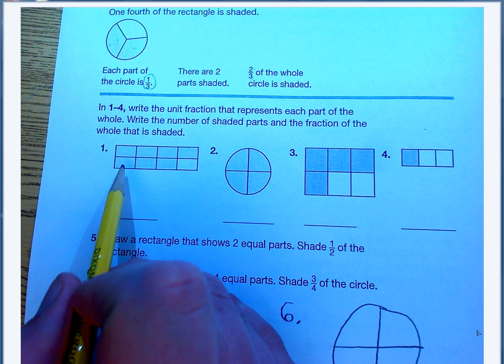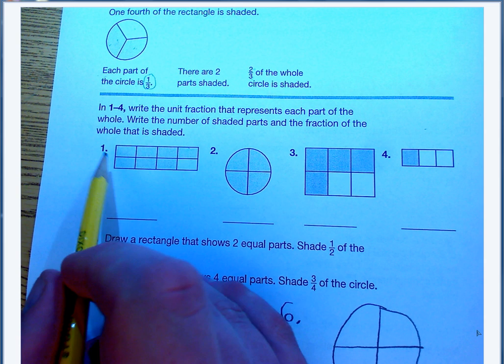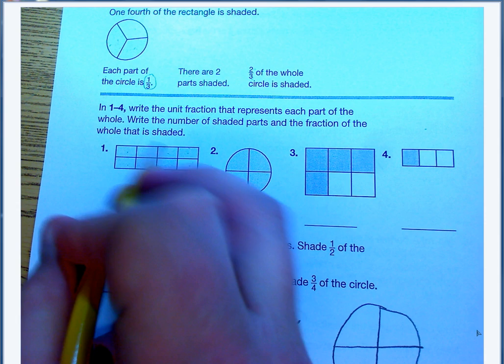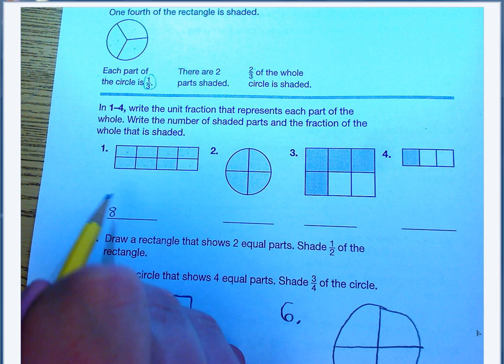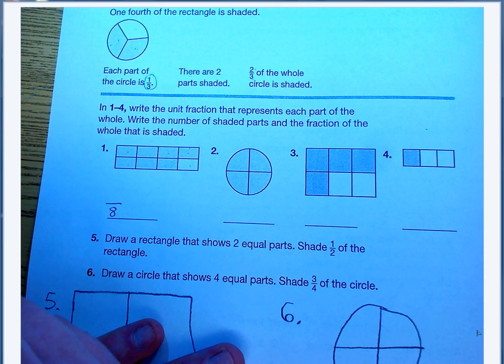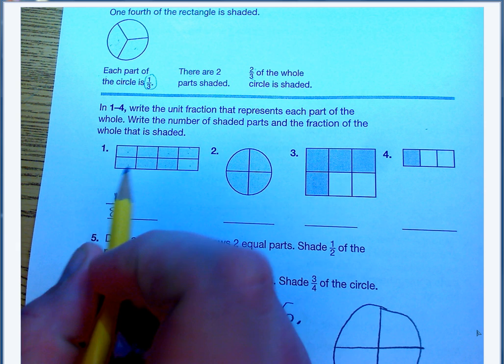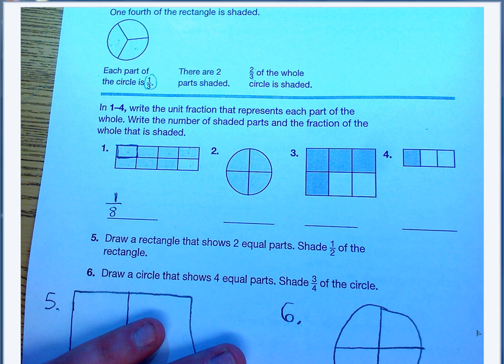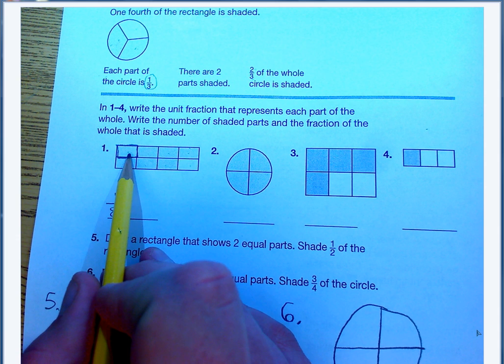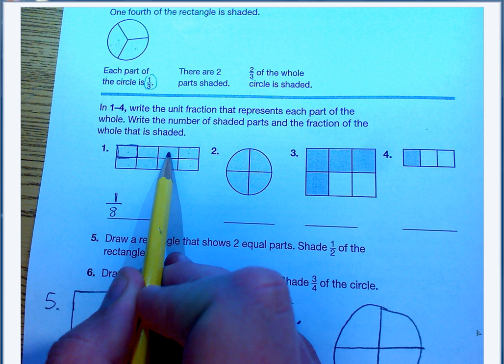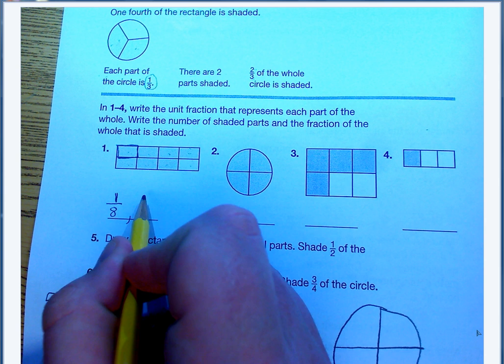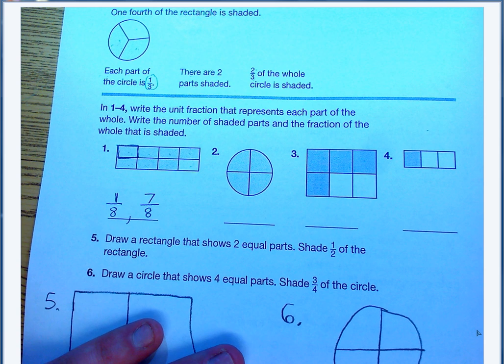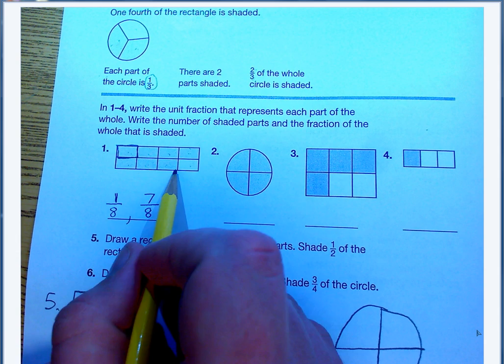The first step we need to do is figure out how many total I have, which is one, two, three, four, five, six, seven, eight. I have eight, so I know that that's going to be my bottom number, my denominator. My smallest unit fraction is always going to be a one on top, so I know one of these pieces is one-eighth. But the question is, how many are shaded? I can go back and count those: one, two, three, four, five, six, seven. So that means seven are shaded out of my eight, so seven-eighths of this rectangle is shaded.